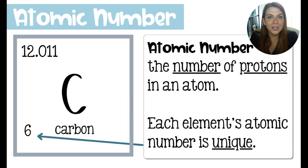Last up, we have the atomic number, which is the whole number that each element has on the periodic table. It represents the number of protons in an atom of that element. And each element has a unique atomic number. There are no doubles. Everybody has their own.